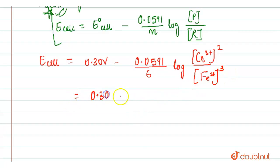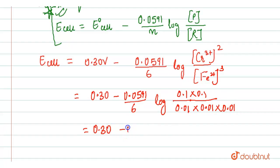So, 0.30 minus 0.0591 upon 6 log of Cr3+. The concentration is given to you as 0.1 square. I will write it like this: 0.01 into 0.01 into 0.01. Now, when you solve it...